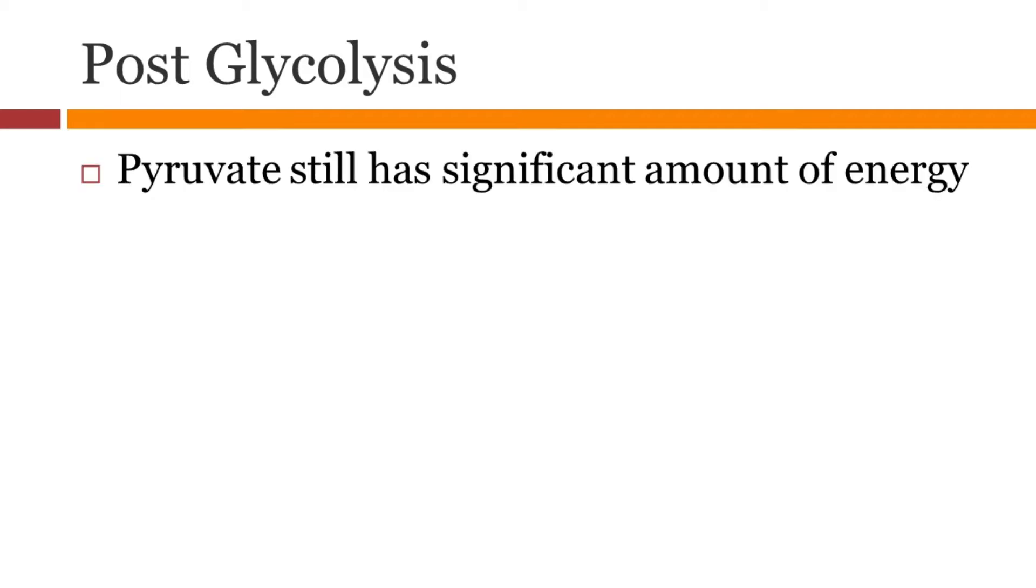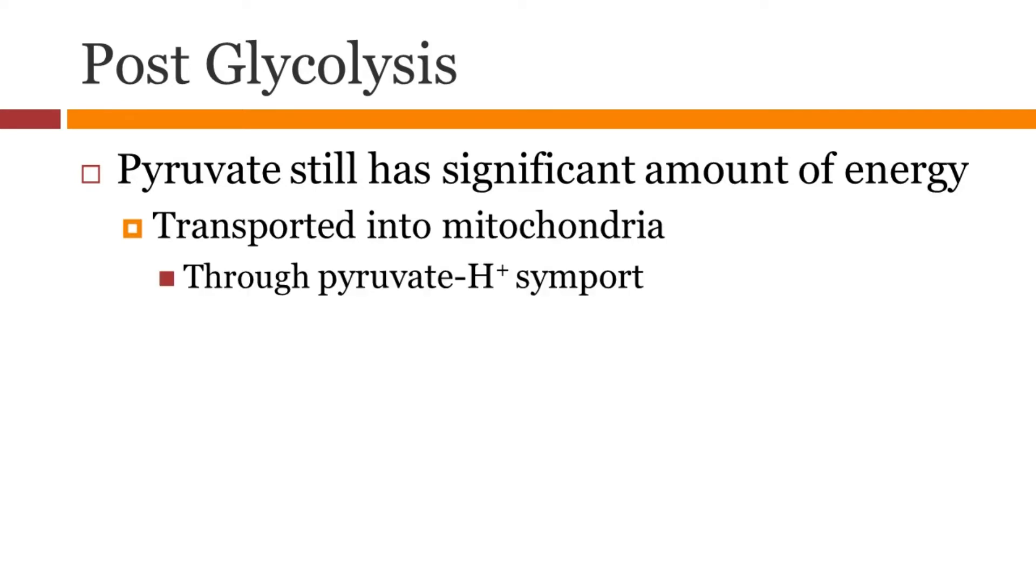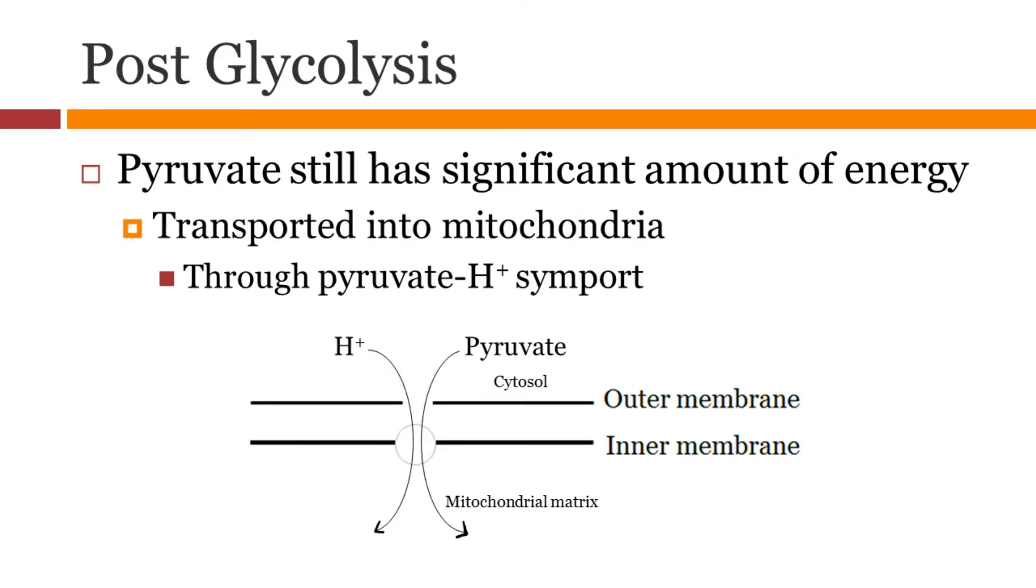Pyruvate has significant amount of energy and is transported into the mitochondria through the pyruvate proton symport. Here you see the pyruvate and proton move into the mitochondrial matrix together. This is facilitated by a membrane protein called pyruvate translocase. It's a logical name to remember.